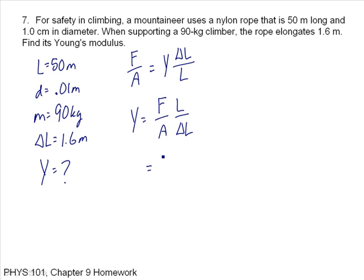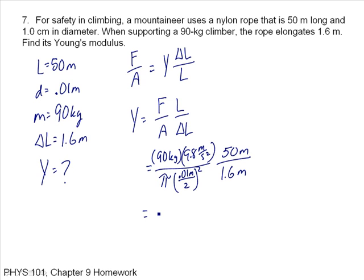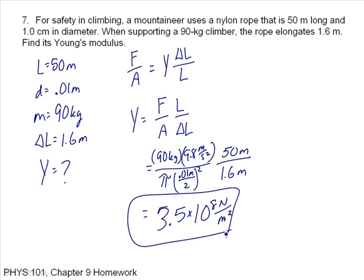My force is going to be the weight of the climber. That's 90 kilograms times 9.8 meters per second squared divided by my area, which is pi times d over 2, d is .01 meters over 2 squared. L is 50, delta L is 1.6 meters, and then that's equal to 3.5 times 10 to the 8th newtons per square meter. So that's the Young's modulus for this particular rope.